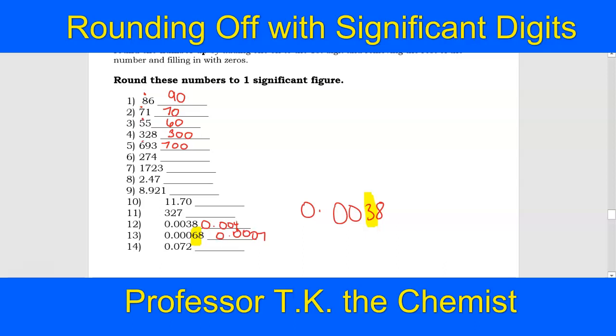This last example, 0.072. We're going to do the same thing. Our first significant digit is the seven. The two tells the seven to stay put, but you still have to incorporate the other zeros that come before it. And that goes to 0.07.